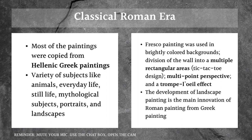Roman painting also used multi-point perspective — unlike Greek linear perspective which shows a side view, multi-point perspective includes side views, frontal views, and varied angles all in the same composition. There was also the trompe-l'oeil effect, meaning a three-dimensional illusion that creates a sense of visual deception or depth.